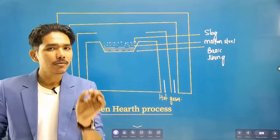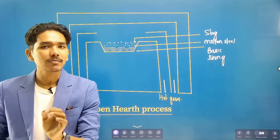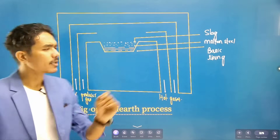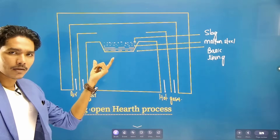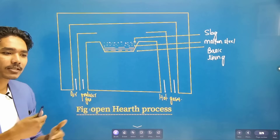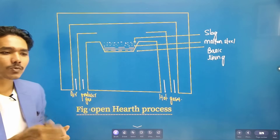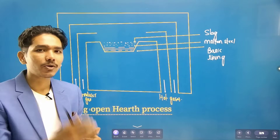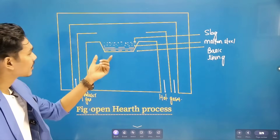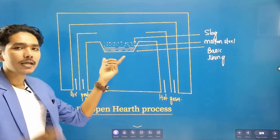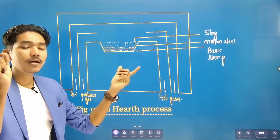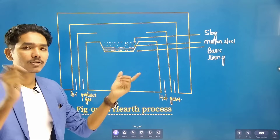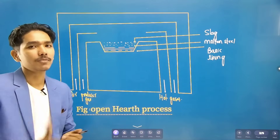Calcium oxide and magnesium oxide are used differently. Phosphorus is removed as an impurity. This is the basic Open Hearth Process, where calcium oxide and magnesium oxide are used.